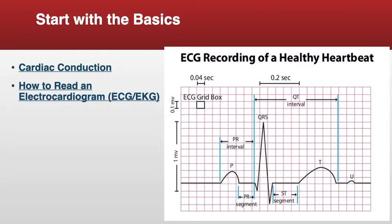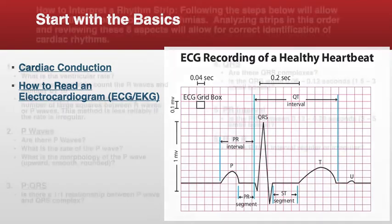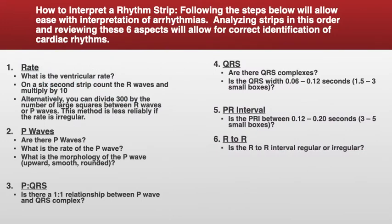When you look at a rhythm strip, you will look to see if you can find any or all of those components. Basic EKG interpretation consists of the following components. First, we want to determine the rate, and you're going to do that by looking at a 6-second strip.